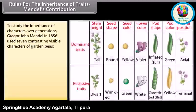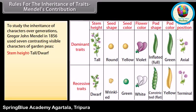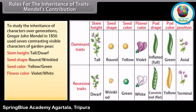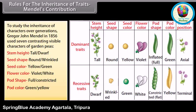To study the inheritance of characters over generations, Gregor John Mendel in 1856 used seven contrasting visible characters of garden peas: stem height — tall and dwarf plants; seed shape — round and wrinkled seeds; seed color — yellow and green seeds; flower color — violet and white flowers; pod shape — full and constricted pods; pod color — green and yellow pods; and flower position — axial and terminal flowers.